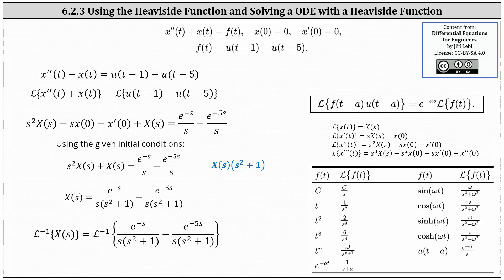To solve using the Laplace transform, we take the Laplace transform of both sides. On the left, the Laplace transform of x″ equals s²X(s) − s·x(0) − x′(0), and the Laplace transform of x(t) gives plus X(s). On the right, the Laplace transform of u(t − 1) is e^(−s)/s, and the Laplace transform of u(t − 5) is e^(−5s)/s. Substituting the initial conditions x(0) = 0 and x′(0) = 0, we get s²X(s) + X(s) = e^(−s)/s − e^(−5s)/s.